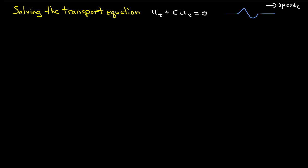Now let's imagine that the two of us are out looking at this wave. You are standing on the ground watching the wave move forward with a speed of c. There you are. And I am standing on a cart, and that cart is moving forward with a speed of c — the same speed as the wave. I will see a wave which is essentially not moving at all, and you will see a wave moving with speed c.